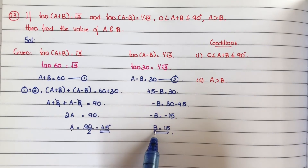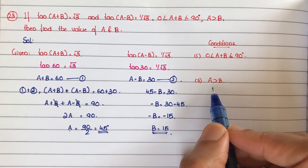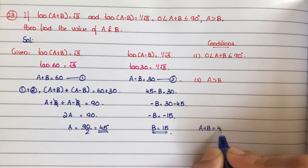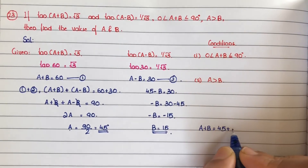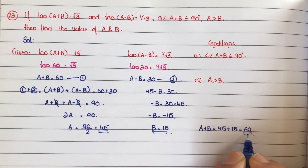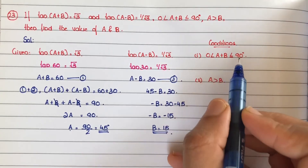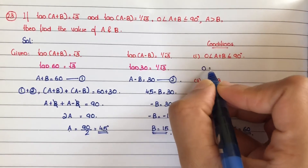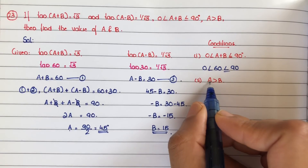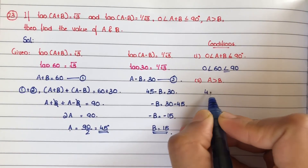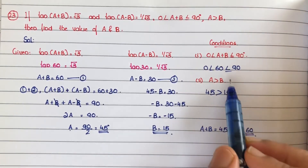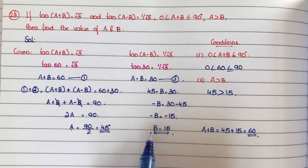So a equals 45 and b equals 15. Now checking the conditions: a+b equals 60, and 60 lies between 0 and 90, so the first condition is satisfied. Second condition: a greater than b — a is 45 and b is 15, so 45 is greater than 15, and the second condition is also satisfied. Therefore a equals 45 degrees and b equals 15 degrees.